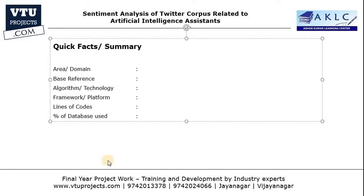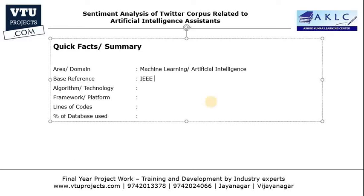So these are the quick facts you should know about your project. The first one is the domain — the domain of our project is machine learning and artificial intelligence. The base reference indicates from where we got the idea. We got the idea from an IEEE 2018 paper, a recent IEEE publication, and we are implementing it on our own.